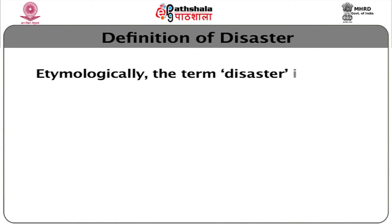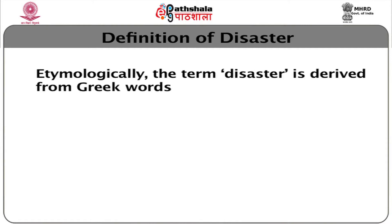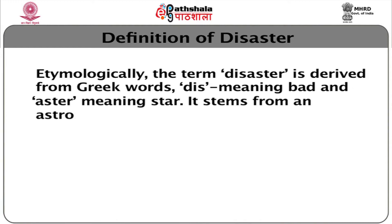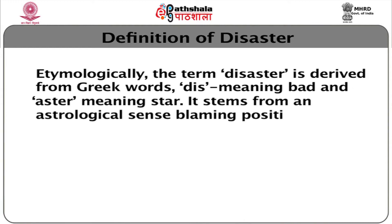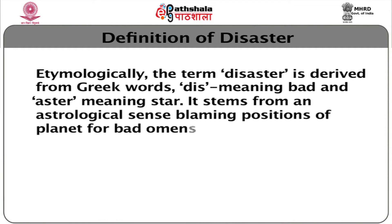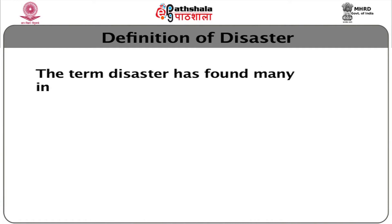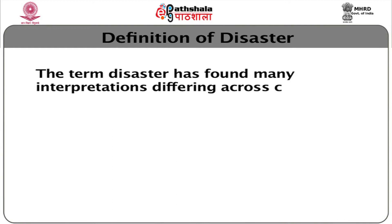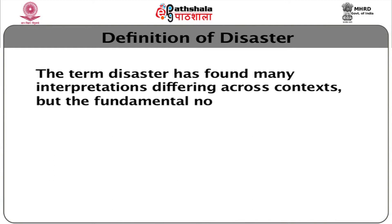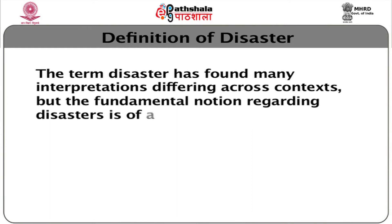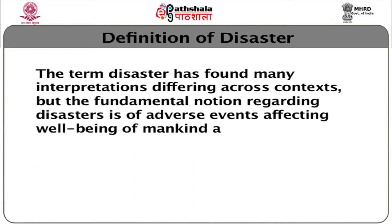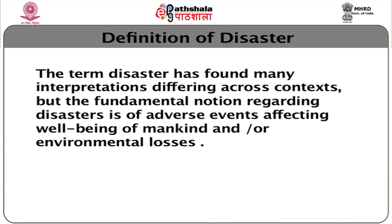Etymologically, the term disaster is derived from Greek words — 'dis' meaning bad and 'aster' meaning star. It stems from an astrological sense blaming positions of planets for bad omens and impacts. The term disaster has found many interpretations differing across contexts, but the fundamental notion regarding disasters is of an adverse event affecting the well-being of mankind and/or causing environmental losses.